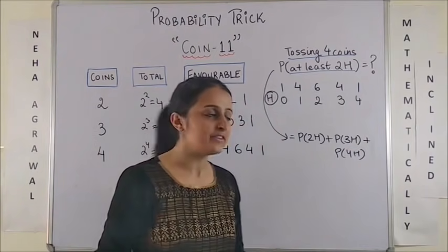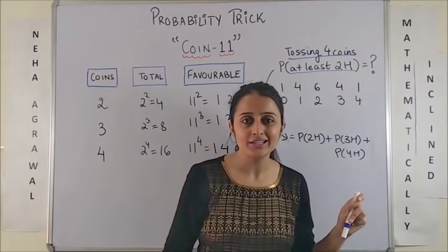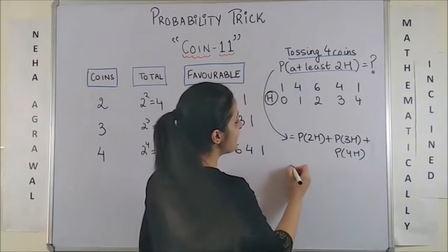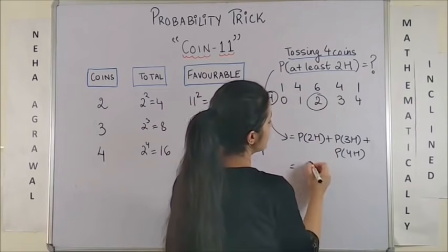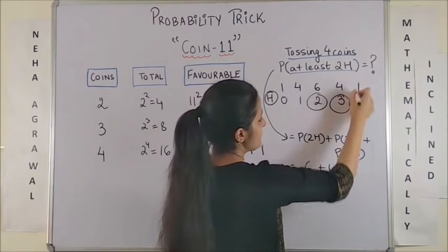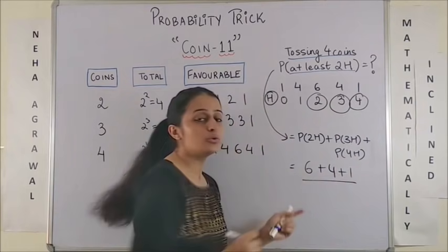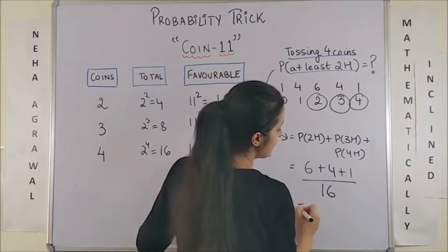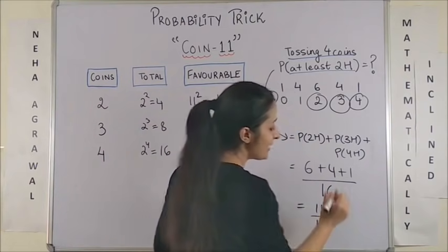Now, obviously for a competitive exam, you don't have to write all these steps. And trust me, you can get the answer within 5 seconds. So, 2 heads, it is very simple. It is 6. For 3 heads, it is 4. And for 4 heads, it is just 1. And you know 2 raised to power 4. That means the total number of outcomes are 16. So, the answer is 11 by 16.